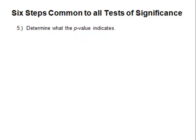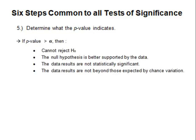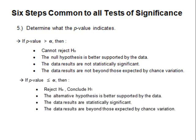Number five: determine what the p-value indicates. If the p-value is greater than alpha, then we cannot reject the null. The null is better supported by the data. The data results are not statistically significant — not beyond those expected by chance variation. If the p-value is less than or equal to alpha, then we reject the null and conclude the alternative. The alternative is better supported by the sample data. The data results are statistically significant, beyond those expected by chance variation. So the p-value determines the outcome of the significance test.